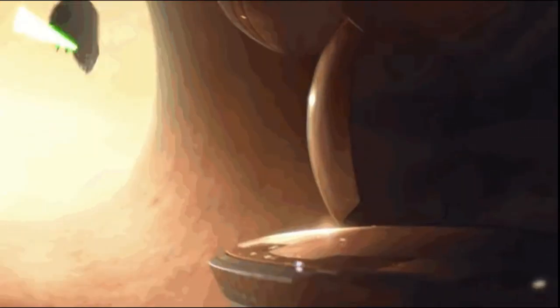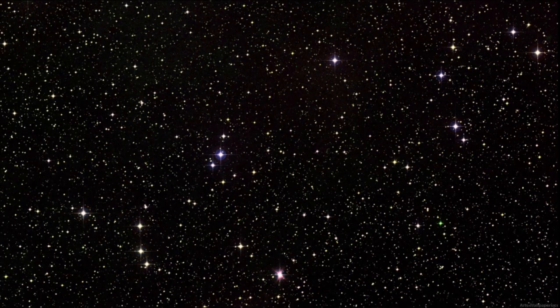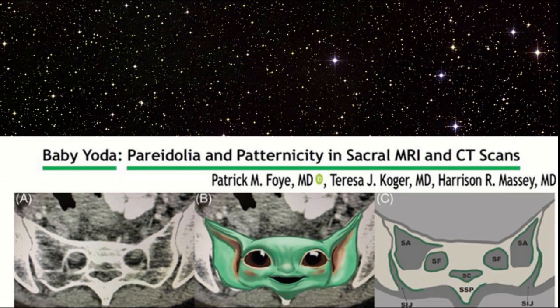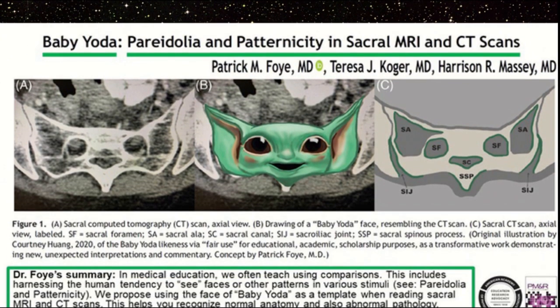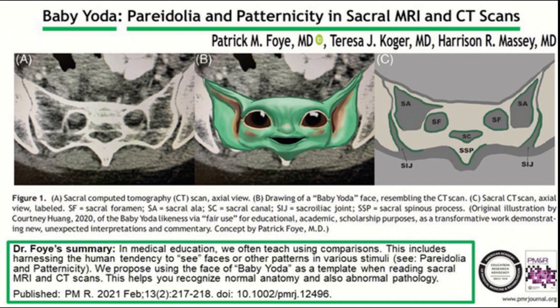Today we will be discussing our favorite green jumping Jedi, Yoda. Long ago, in a medical sector far far away, a baby Yoda pareidolia was discovered and published, aiding in the education of sacral imaging. The sacral ala represent the ears, the sacral foramens represent the eyes, and the sacral canal and sacral spinous process illustrate the mouth and the chin.